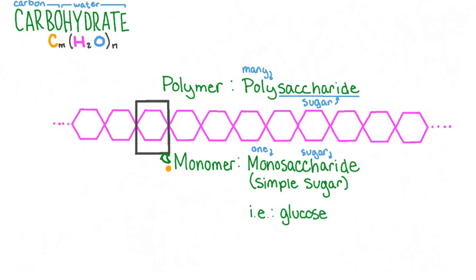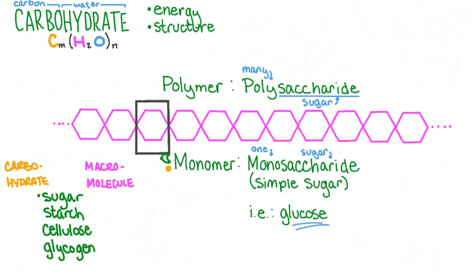An example of a monosaccharide that you're probably familiar with is glucose, one of the substrates our cells commonly use for cellular respiration. Some of the functions of carbohydrates are storing easily transferable energy and providing structure to certain types of cells. Some complex carbohydrates include starch, cellulose, and glycogen.